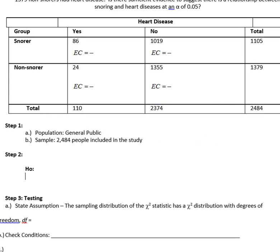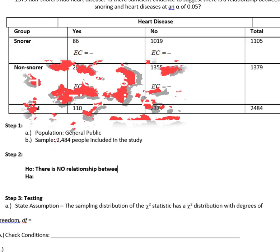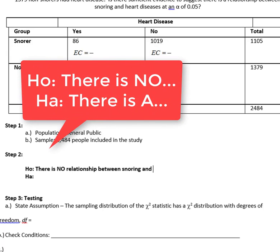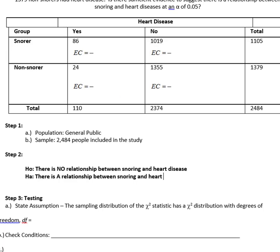In Step 2, we will be defining our null, H₀, and our alternative, Hₐ. Remember for these problems we have no null value or parameter we're trying to make an inference on. We just want to see if there's evidence of a relationship. So the null will be: there is no relationship between our two variables, which here are going to be snoring and heart disease. And the alternative, Hₐ, is going to be: there's a relationship between snoring and heart disease.